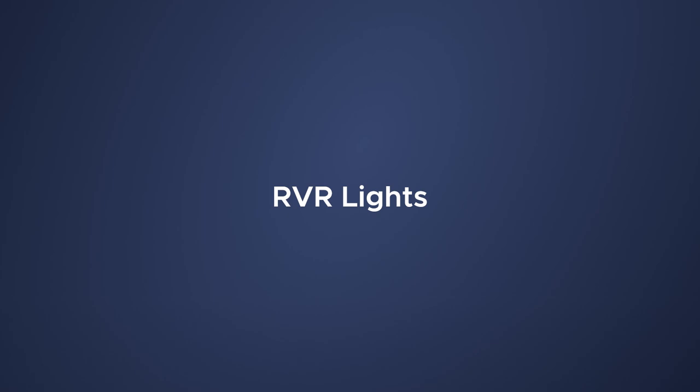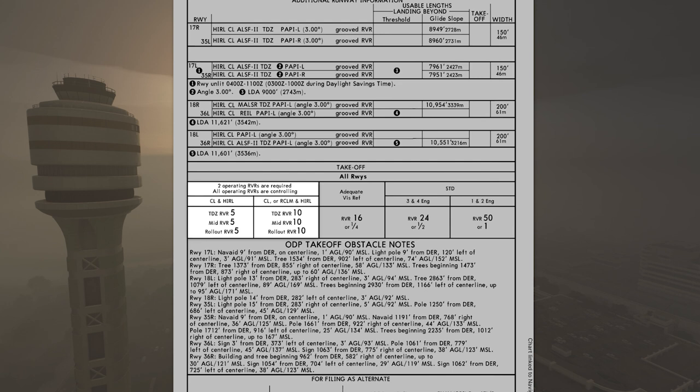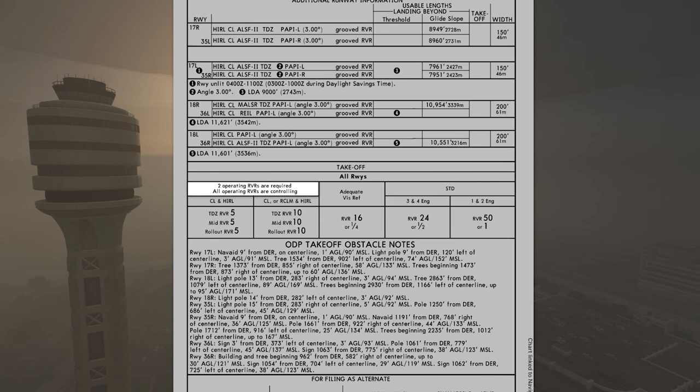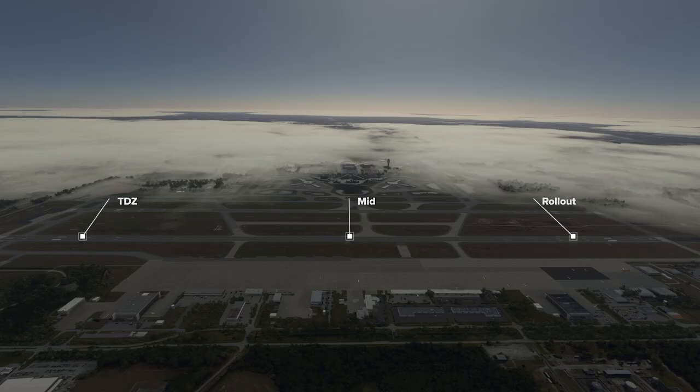Moving to the left side of the chart — what about all the runway lighting, like centerline lighting? Shouldn't the minimums decrease because of that? The answer is yes, depending on the lighting. In this case, two operating RVRs are required. There are usually three RVR transmitters: touchdown zone, mid, and rollout. We need at least two operational. All RVRs are controlling — meaning the RVR reading takes precedence over reported visibility.